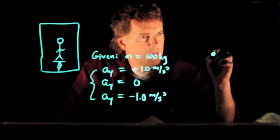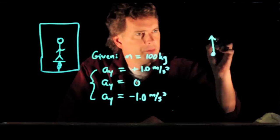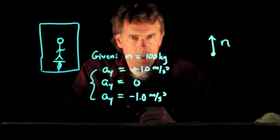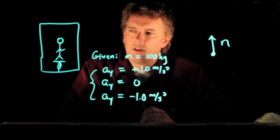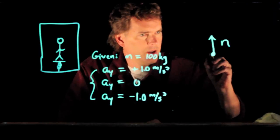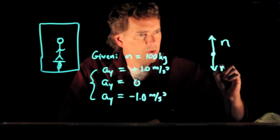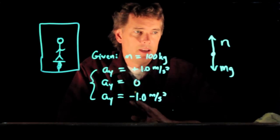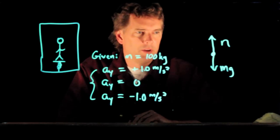So you become a dot. And there are some forces that are acting on you. There is the normal force N from the scale pushing up on you. And there is your weight down. And that is it for the free body diagram.